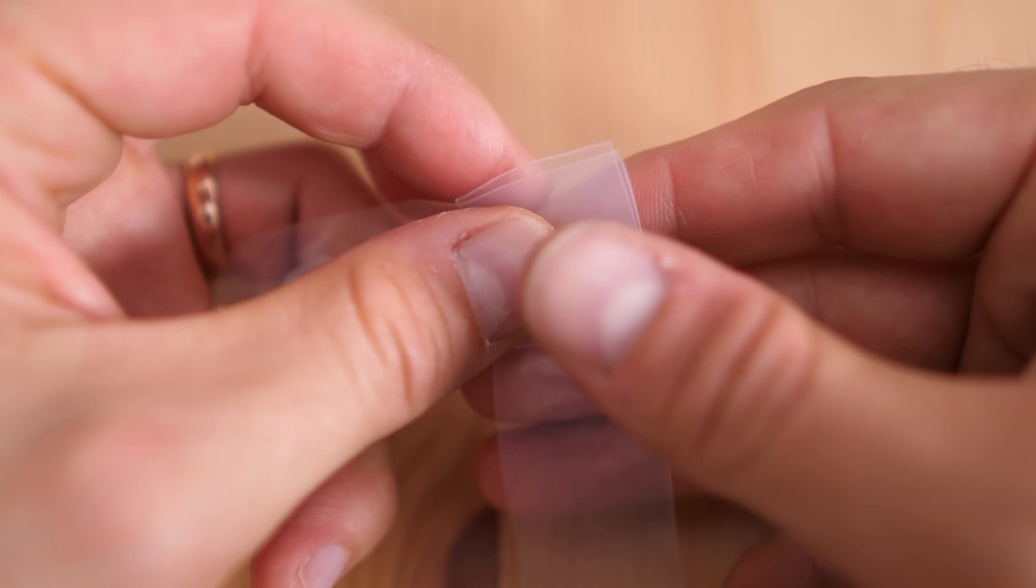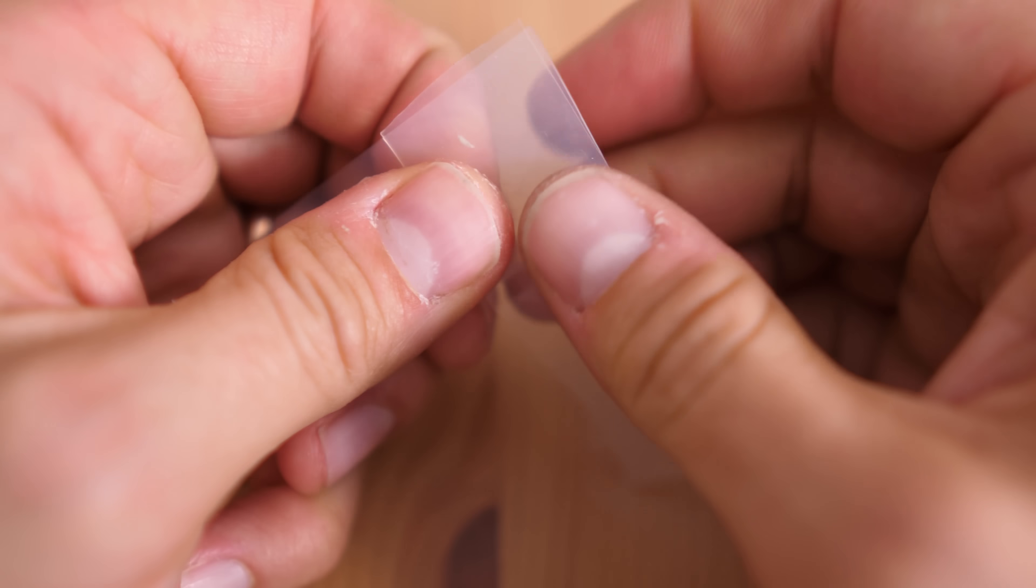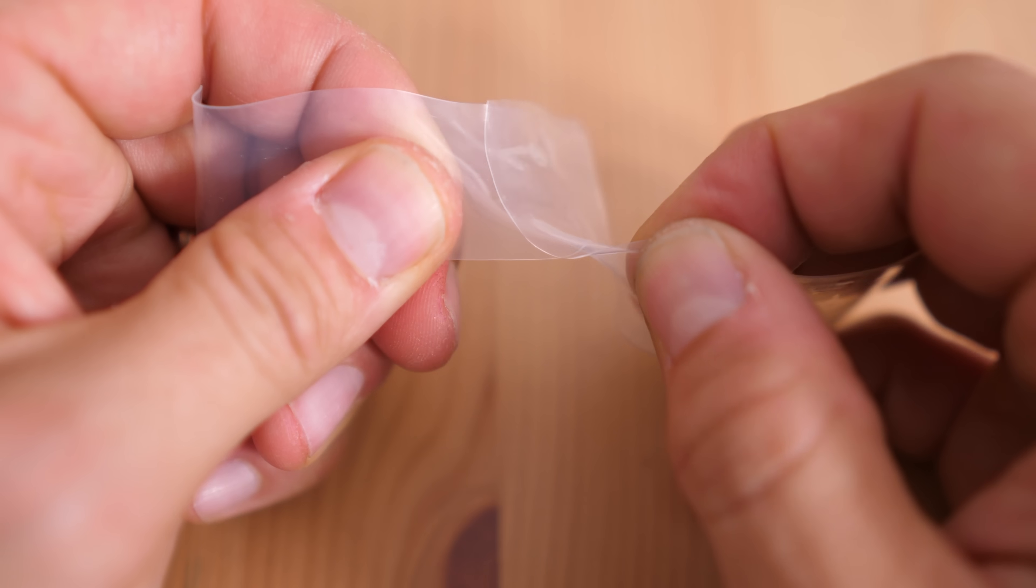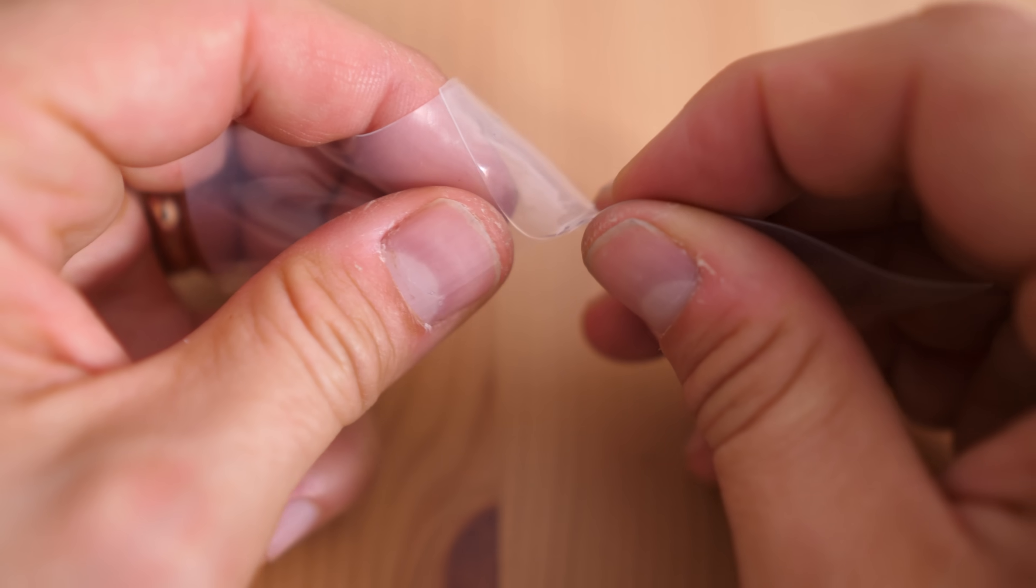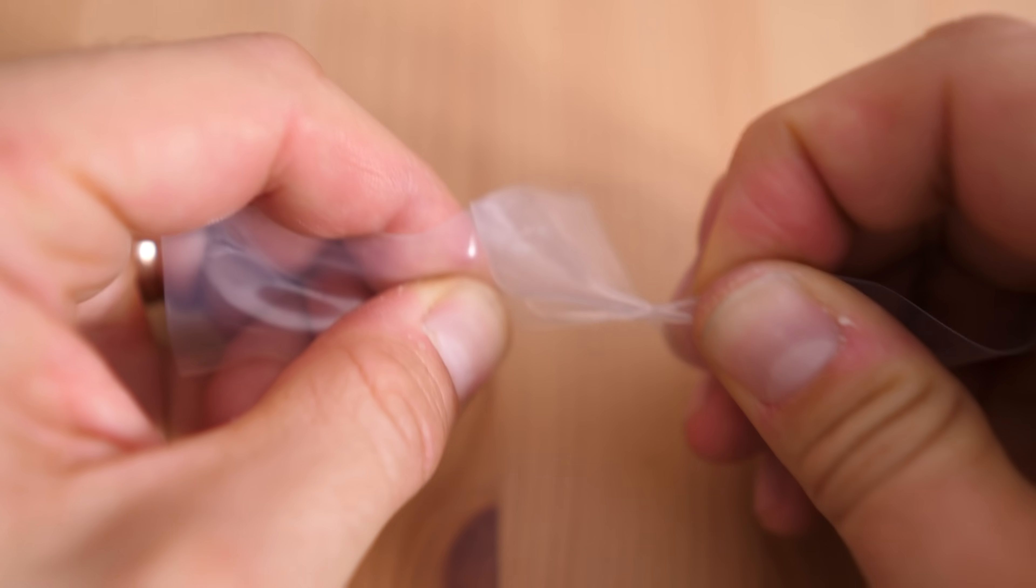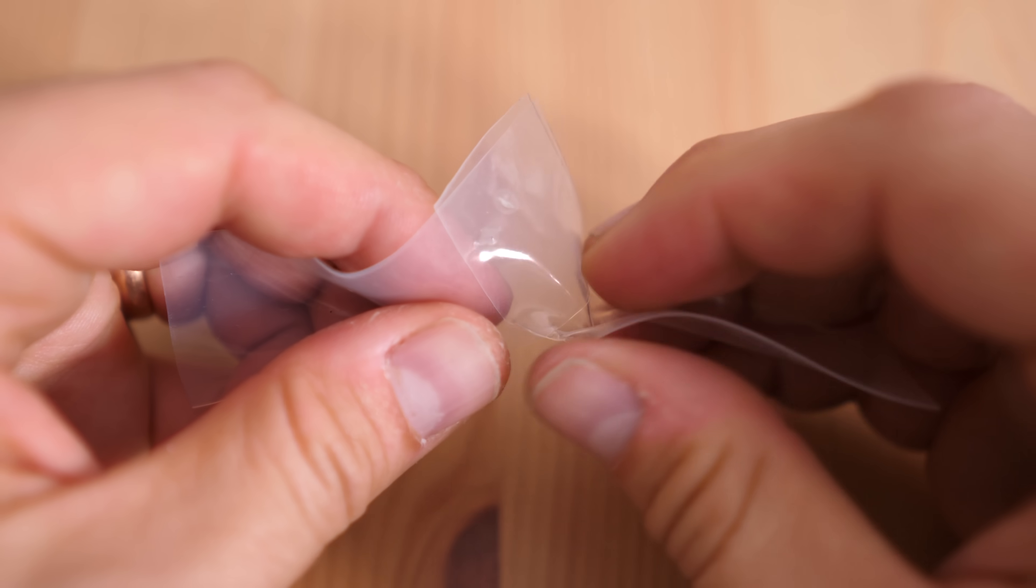So why is it then that I can cut this material into two pieces, push the two pieces together and it reforms into a single piece? Well the full explanation it seems is hidden behind trade secrets but there is some information out there.